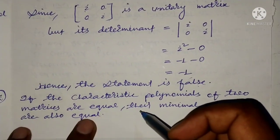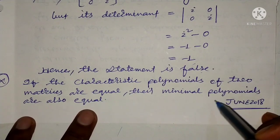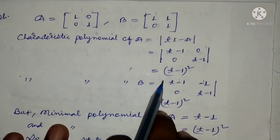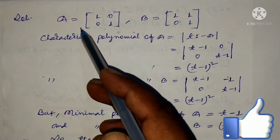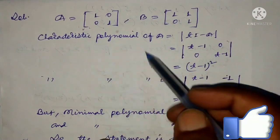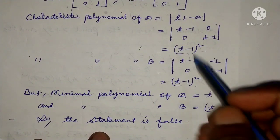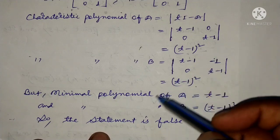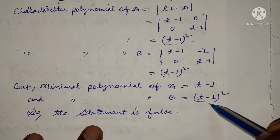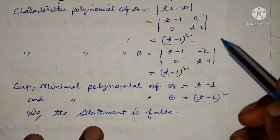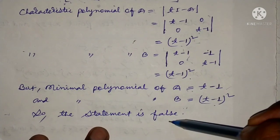If the characteristic polynomials of two matrices are equal, then minimal polynomials are also equal. This statement is false. I will give an example with two matrices A and B. Let A's characteristic polynomial be (x - 1)³ and B's characteristic polynomial also be (x - 1)³. The characteristic polynomials are equal. Now the minimal polynomial of A is (x - 1) and B's minimal polynomial is (x - 1)². So this statement is false.